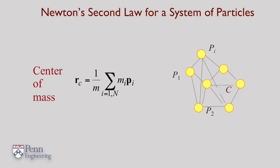Let's assume that we can write position vectors p1, p2, pi for each of these particles. Let's denote the mass of the ith particle by m sub i.